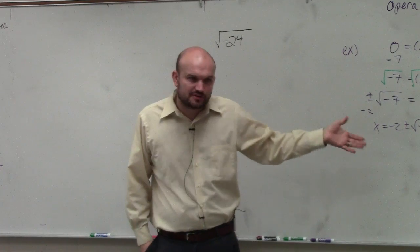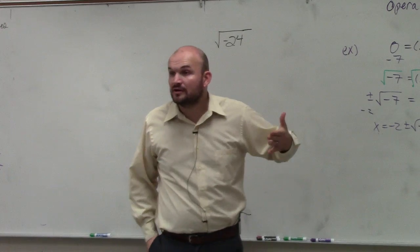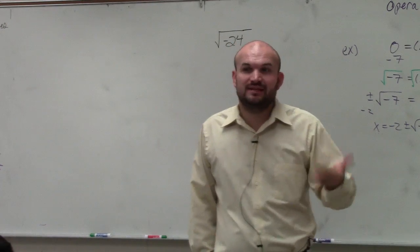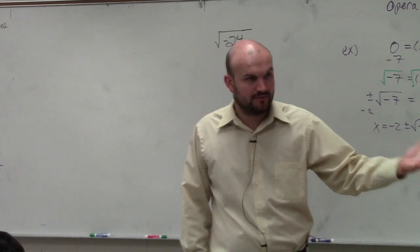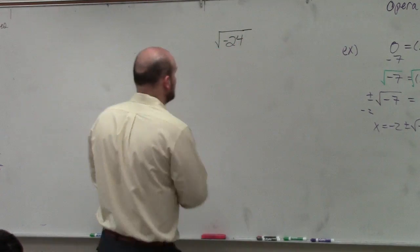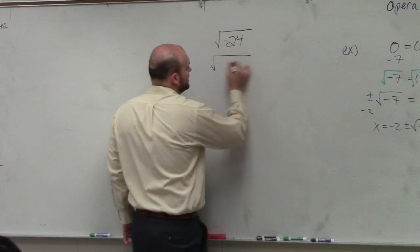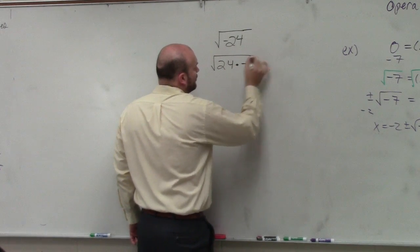You guys should know now we can't take the square root of a negative. However, we can take the square root of negative 1, but we at least have something to represent the square root of negative 1, which is i. So the first thing I'm always going to do is just break it apart into 24 times negative 1.